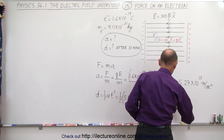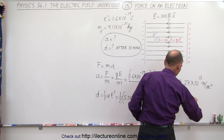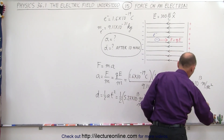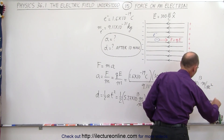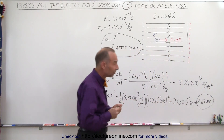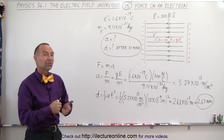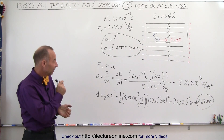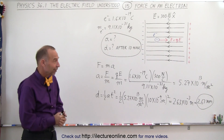So that would be 2.63 times 10 to the minus 3 meters, which would be 2.63 millimeters. So assuming there's enough space between the two plates, the electron will have moved 2.63 millimeters in that very short amount of time. And that's how that's done.